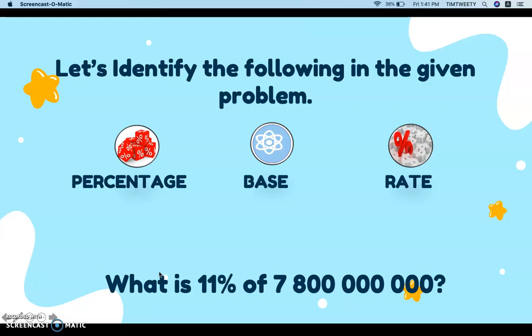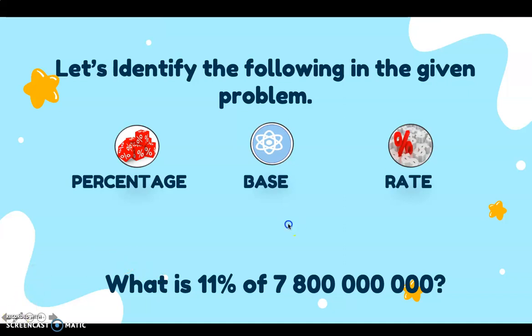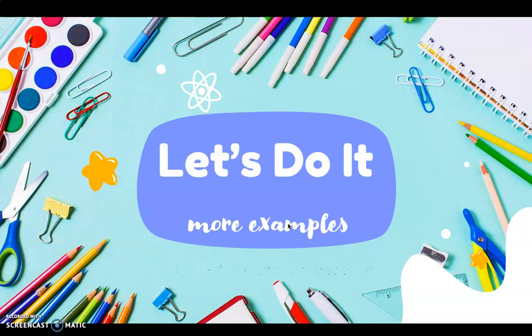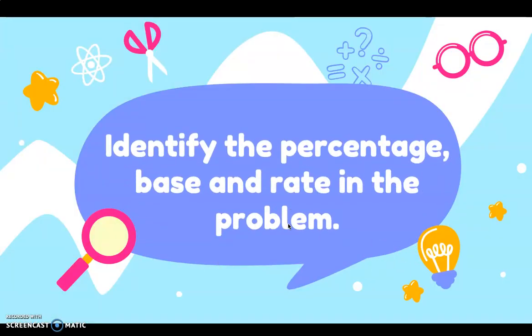For the base — from the definition, the base is the total number and is usually located before the word 'of' — our base is 7.8 billion. For the rate, it has a percent symbol, so our rate is 11 percent. Our missing value is the percentage, because we need to find what 11 percent of 7.8 billion is. That is the percentage.